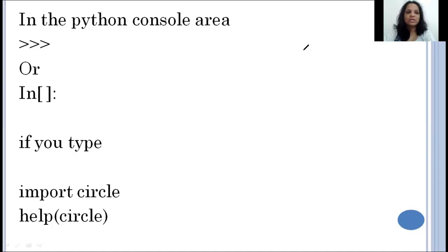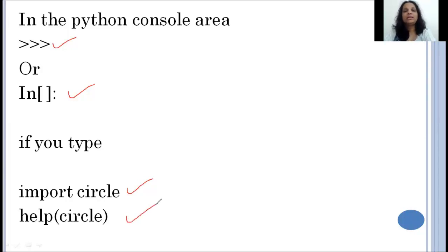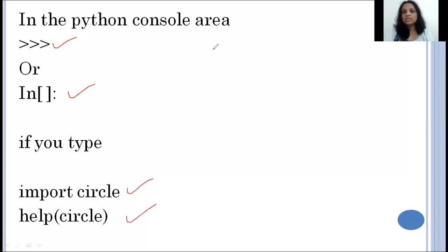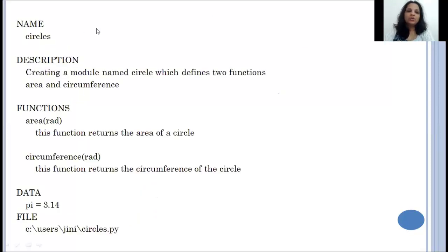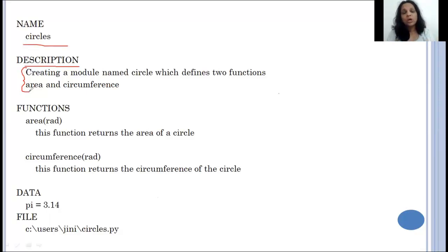On your Python console — that's where your output area is — if you write import circle and then write help(circle), it will tell you everything that circle has. Same thing with the math module: write import math then help(math), and it will tell you all the various functions and what each function does. It will show you the module name, and the description tells you what the module does — this is exactly what you wrote as the doc string. That's why doc string is important.